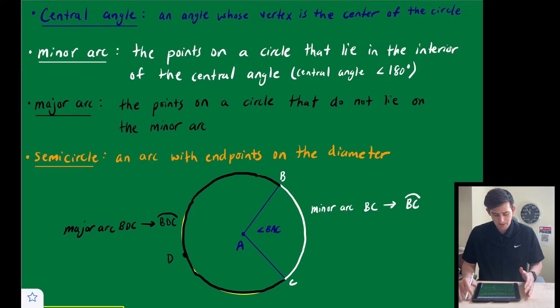Next we're going to talk about a minor arc. The minor arc here is in white. The minor arc is just the points on a circle that lie in the interior of the central angle when the central angle is less than 180 degrees. So here we have BC would be our minor arc, and we denote our minor arc with an arc over the two letters or the two endpoints. And for a minor arc, it's just two letters.